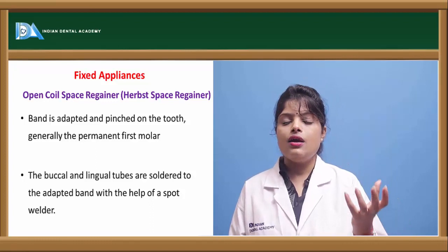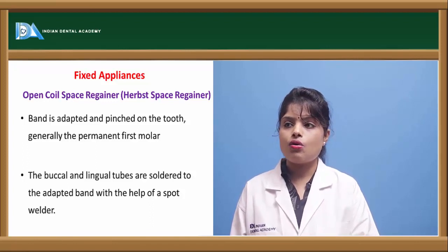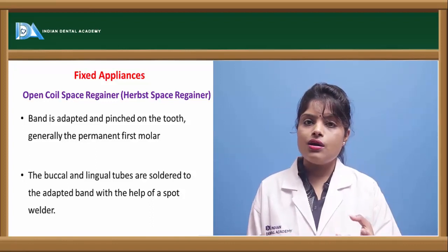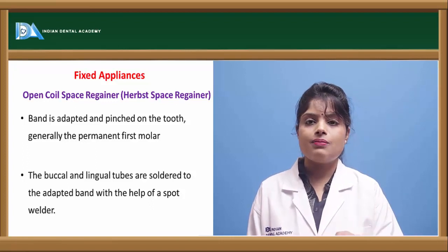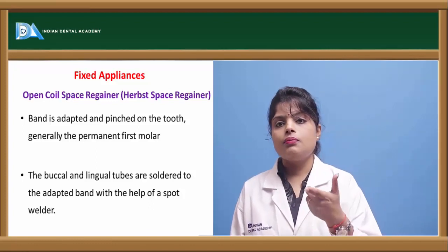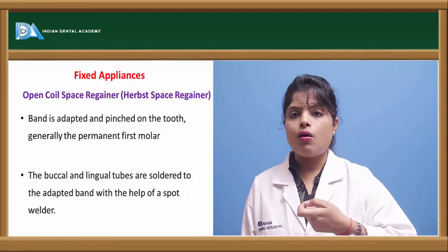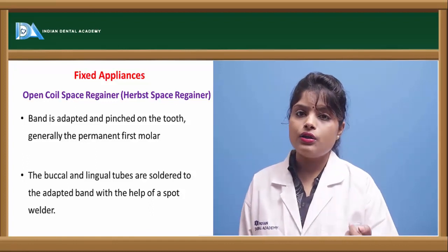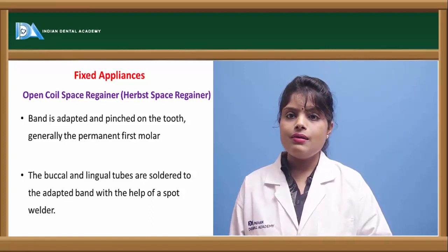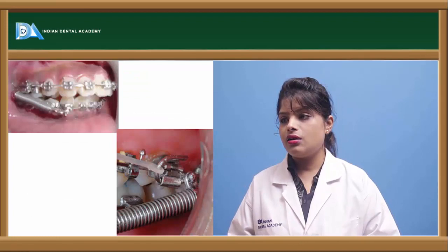For the open coil space regainer, a band is fitted onto the permanent molar adjacent to the space. Prefabricated bands can also be placed on the permanent molar. A buccal tube is soldered onto the buccal side of the band. A coil or wire is then placed inside the buccal tube and adapted to the distal surface of the adjacent teeth. This helps in space regaining after activation.